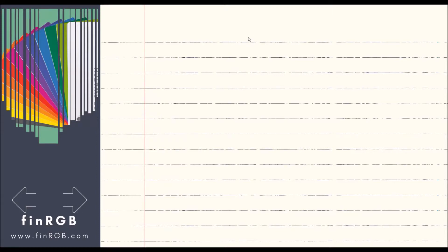In this short video, we'll take a look at an alternative way of conducting a backtest. This alternative way makes use of what we call a log likelihood ratio, or the LR statistic.